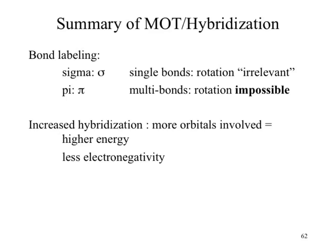As a direct result of our rotations being impossible within our multiple bonds — in particular our double bonds — we end up with cis-trans isomerism. There will be a video coming up talking about cis-trans isomerism and how you go through and name those things accordingly.